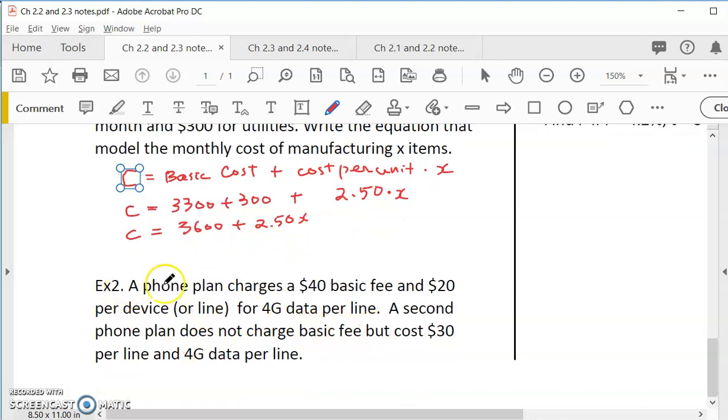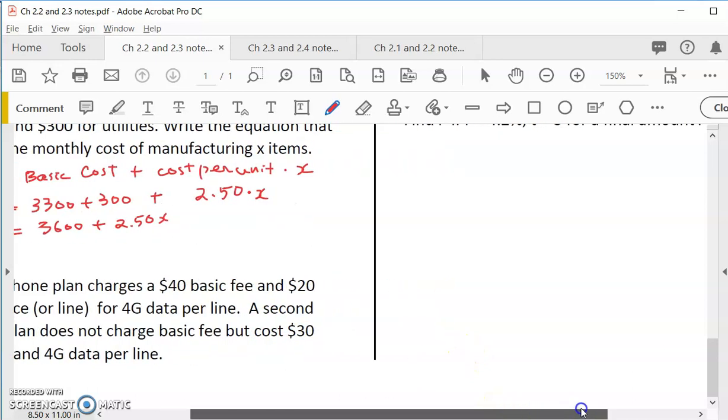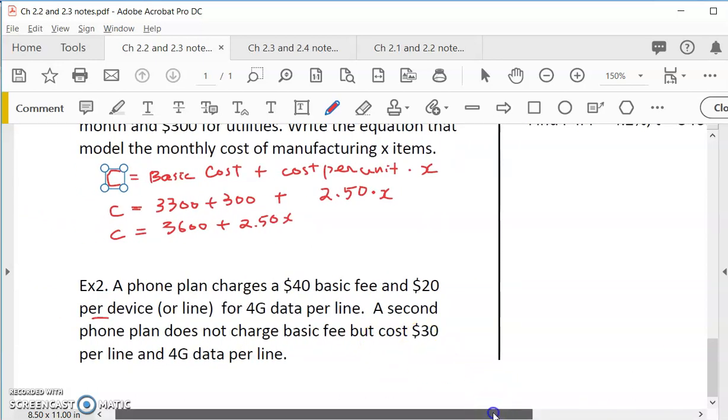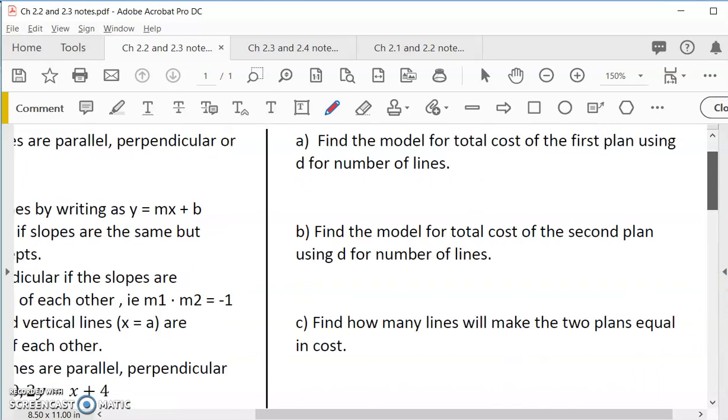Example two would be solving an equation. So let's look at this. A phone plan charges $40 basic fee. So whenever we deal with cost, we always have basic fee. And then $20 per device for 4 gig data per line. So anytime you add a new line, it will be $20. So this is something that you need to multiply for the number of device. A second phone plan does not charge basic fee but costs $30 per line and also 4 gig data per line. You can see that the data rate is the same. But one is $20. The other is $30. But for the second plan, you have to pay $30 per line. There's no basic fee. Zero.